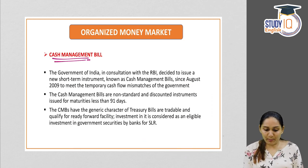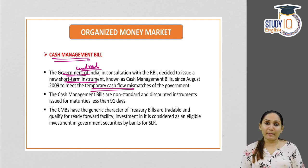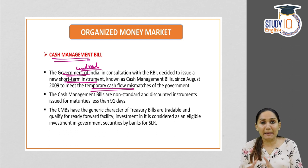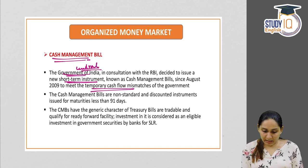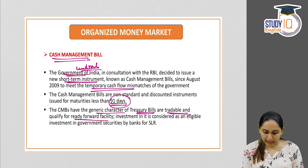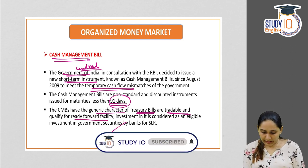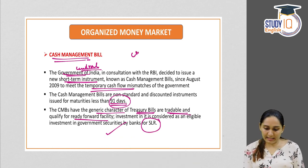Eighth is the cash management bill (CMB), used by the central government as a short-term instrument for meeting temporary cash flow mismatches. The maximum maturity period is 91 days. They have a generic character of treasury bills, are tradable, qualify for ready forward facility, and are eligible for SLR requirements.